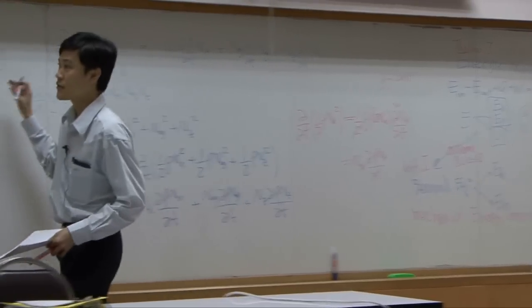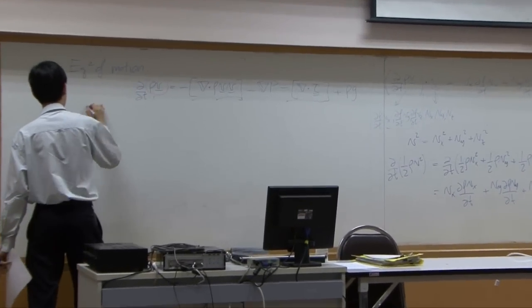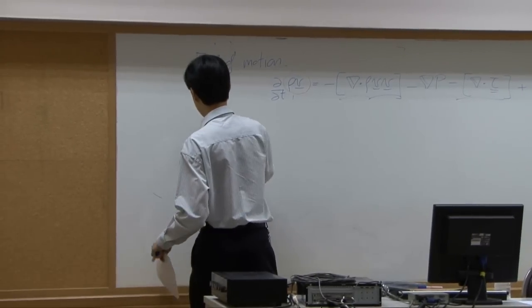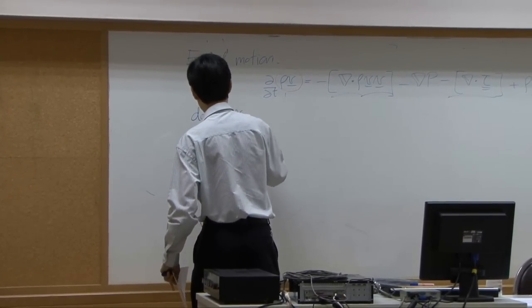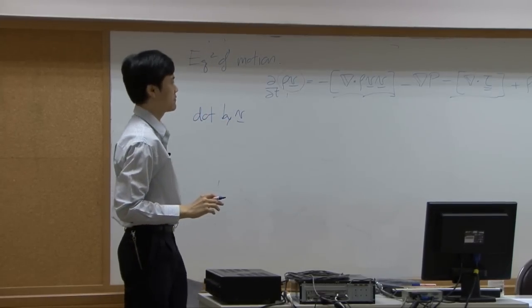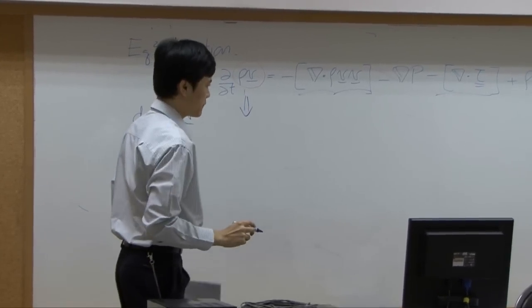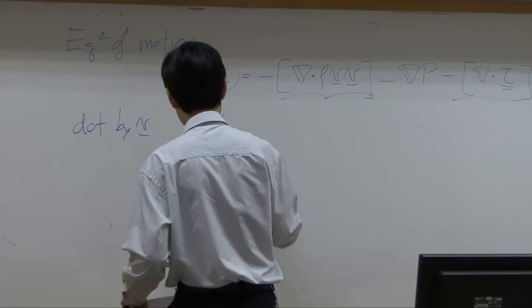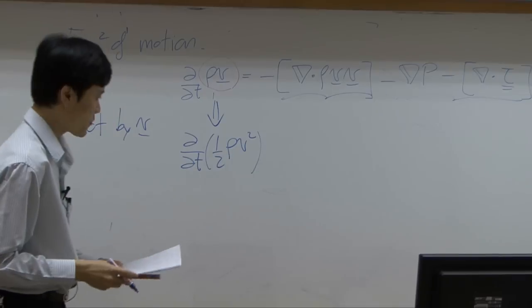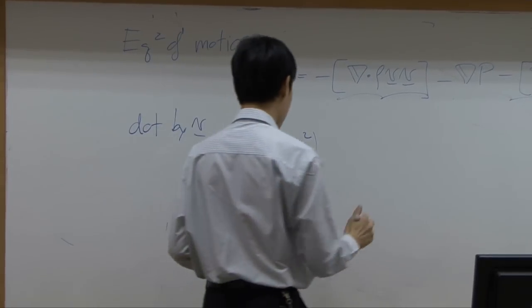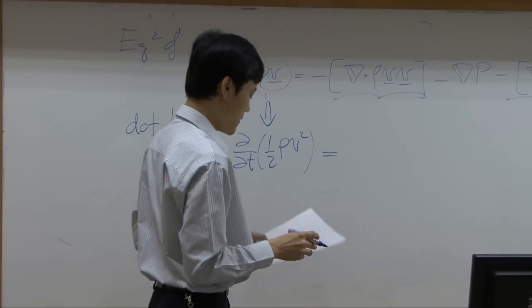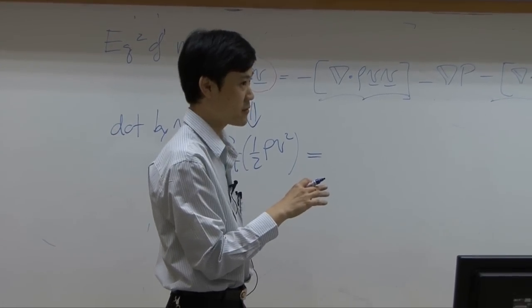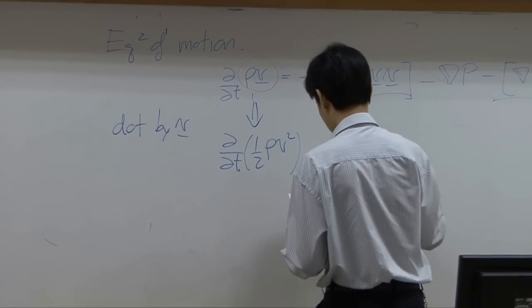Now, starting back from equation of motion, if you dot it by v all over the place, the first term here we already proved that when you dot it, you get d by dt of 1 over 2 rho v squared. The rest, I'm not going to show you. I just give you a result.